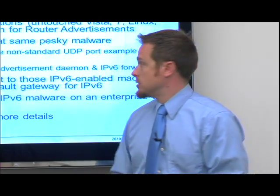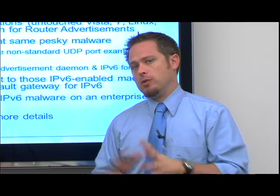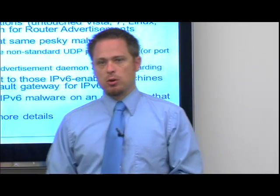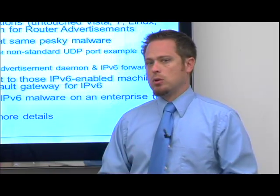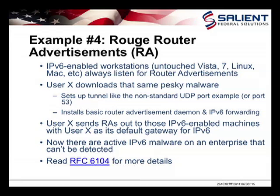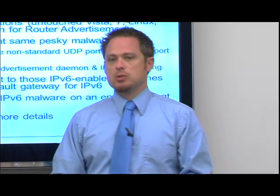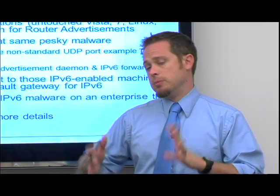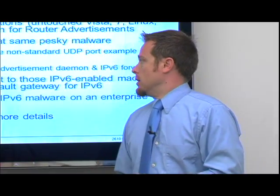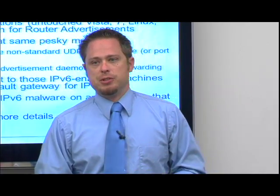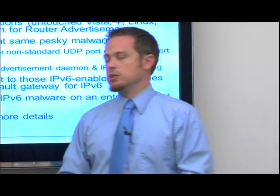The last topic is rogue router advertisements. Every IPv6-enabled machine — Windows Vista, 7, Mac OS, Linux — is listening for router advertisements, which is a key part of the IPv6 protocol. Devices will follow whatever a router advertisement says, whether they heard it three minutes ago or just now. Consider the loaded gun scenario again: user X downloads that same malware, which sets up a tunnel over port 53, then installs a router advertisement daemon. It sends out RAs to hundreds or thousands of IPv6-enabled workstations in the enterprise network, bootstrapping them to use the compromised host as their default gateway and a gateway out to the IPv6 internet — all tunneled over port 53 — and nobody knows the difference.